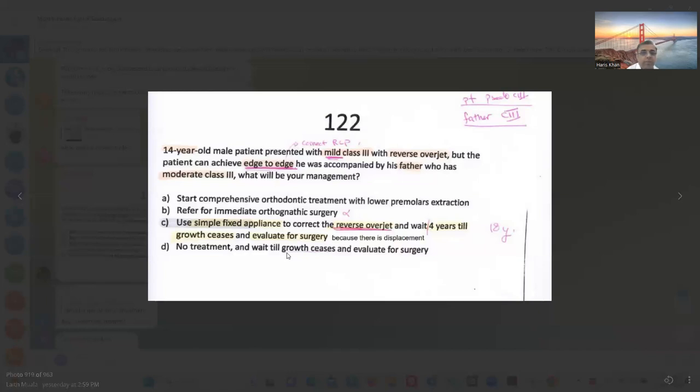A 14-year-old male presenting with a mild class 3, but the patient can achieve edge-to-edge relation. He was recommended by a father who has moderate class 3. What will you do in management? The previous question asked if the patient is growing. Start comprehensive orthodontic treatment with lower premolar extraction. If aids are present, you can refer to immediate orthognathic surgery. Use simplified fixed to correct reverse overjet and wait four years till growth stops because there is a displacement. No treatment, wait till the growth ceases.